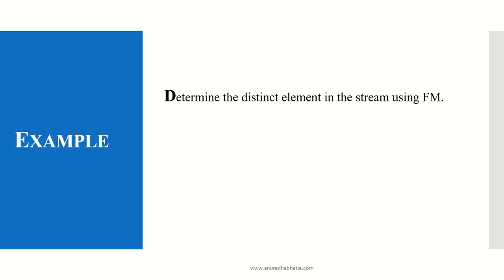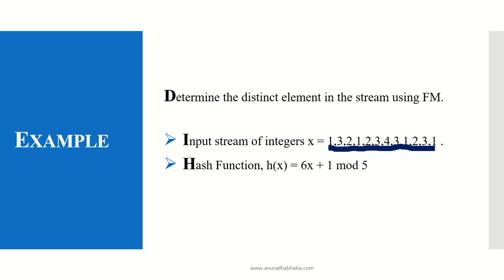So let's take an example. If my input stream of integers is given as 1, 3, 2, 1, 2, 3, 4, 2, 3, and 1. The hash function which is very important for the FM algorithm is considered as h(x) = 6x + 1 mod 5. This hash function will be given to you for calculating and solving this particular problem, and will be used for this input stream of integers for calculating FM.